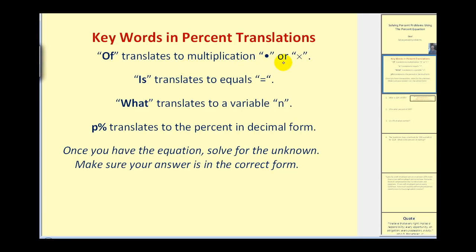Of translates to multiplication, is translates to equals, and what or what number translates to a variable — I used n here. If we're given the percent, we need to translate that to its decimal form. Once we have the equation, we solve for the unknown and make sure the answer is in the correct form: if they ask for a number we leave it as a number, or if they ask for a percent we write it as a percent.